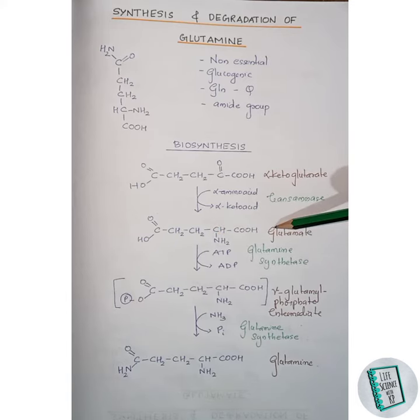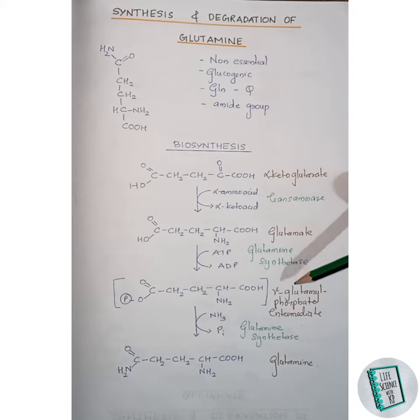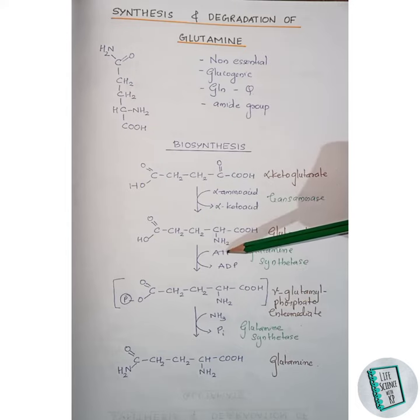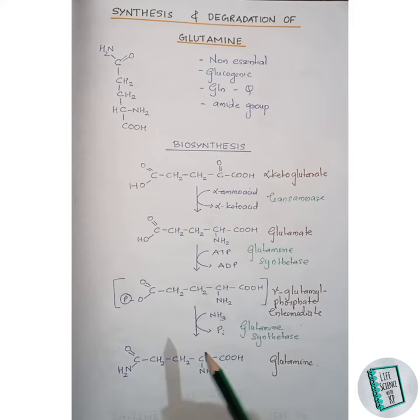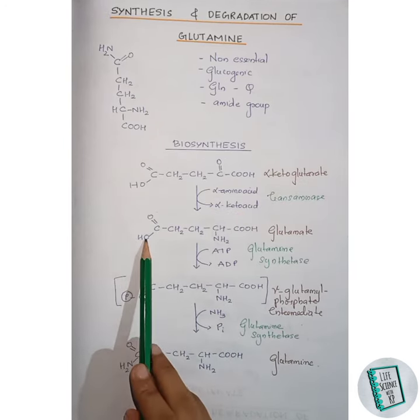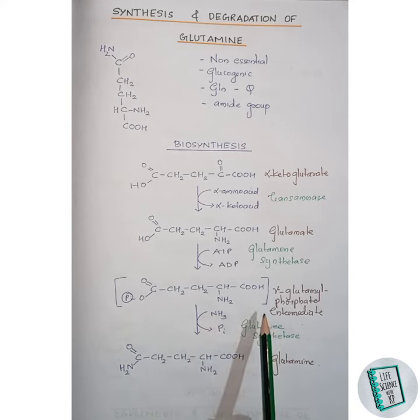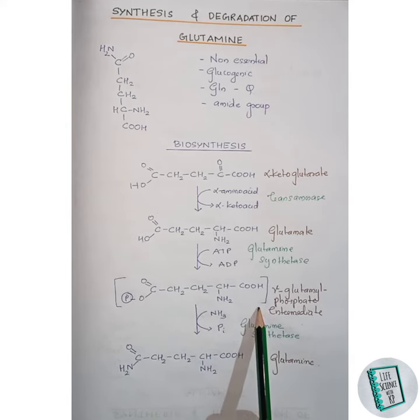This glutamate then, in the presence of glutamine synthetase, forms a gamma-glutamyl phosphate intermediate. ATP is needed for the provision of the phosphate group — it provides one phosphate that attaches to the oxygen here, forming the gamma-glutamyl phosphate intermediate.